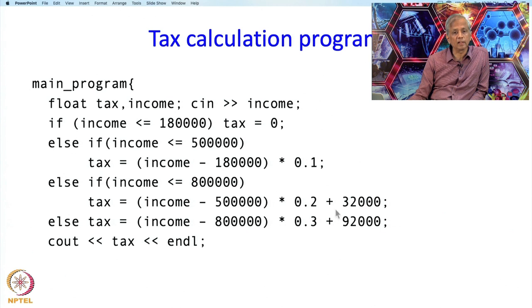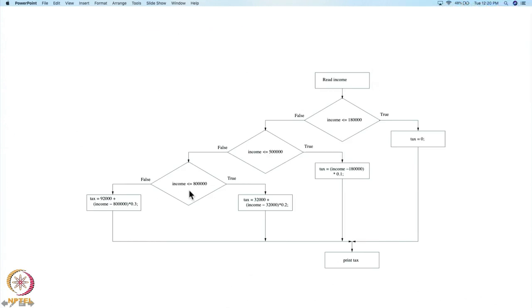That concludes this if statement. This general if statement looks very large, and then we print out the tax. I have shown the entire program as a flowchart. First we read in the income, then we check if it is less than 180,000 — if so, there is no tax. Otherwise we check if it is less than 500,000 — if so, tax is 10% of the excess. Otherwise we check if it is less than 800,000, then tax is as per that box. If income is bigger than 800,000, tax is as per the last box, and at the end we print the tax.